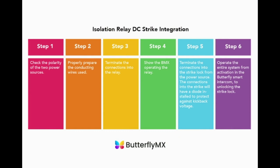This video demonstrates the process of connecting the ButterflyMX smart intercom to a direct current strike using an Ultronix RB5 relay as an isolation relay and a diode to absorb kickback voltage.